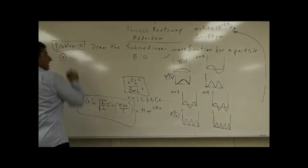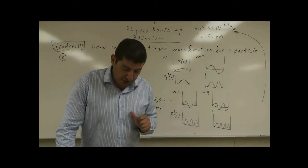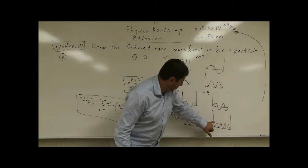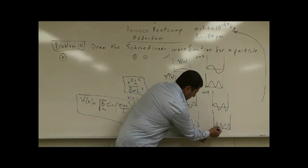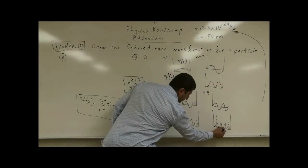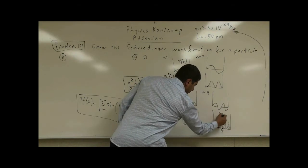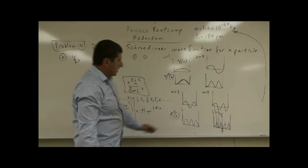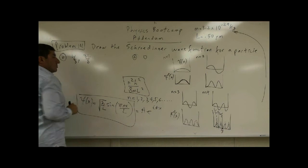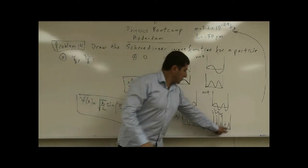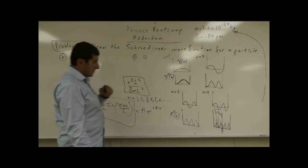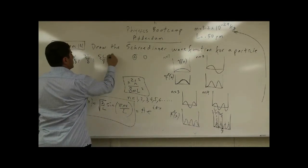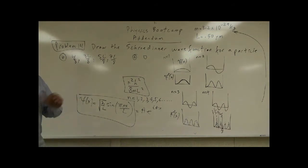Part B asked: what are the most probable positions in the n equals 4 state? The most probable positions are the peaks of the probability density. These occur at L over 8, 3L over 8, 5L over 8, and 7L over 8. Those are the most probable positions in the n equals 4 state.